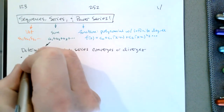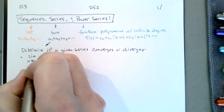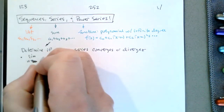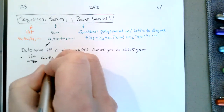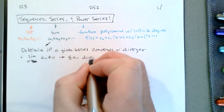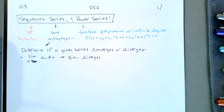We know that if the limit as n goes to infinity of a_n — if the limit of the terms is not zero, then the series diverges. This is our necessary but not sufficient condition for convergence, and it's the first thing we should check. If the terms don't go to zero, the series diverges, and we're done.